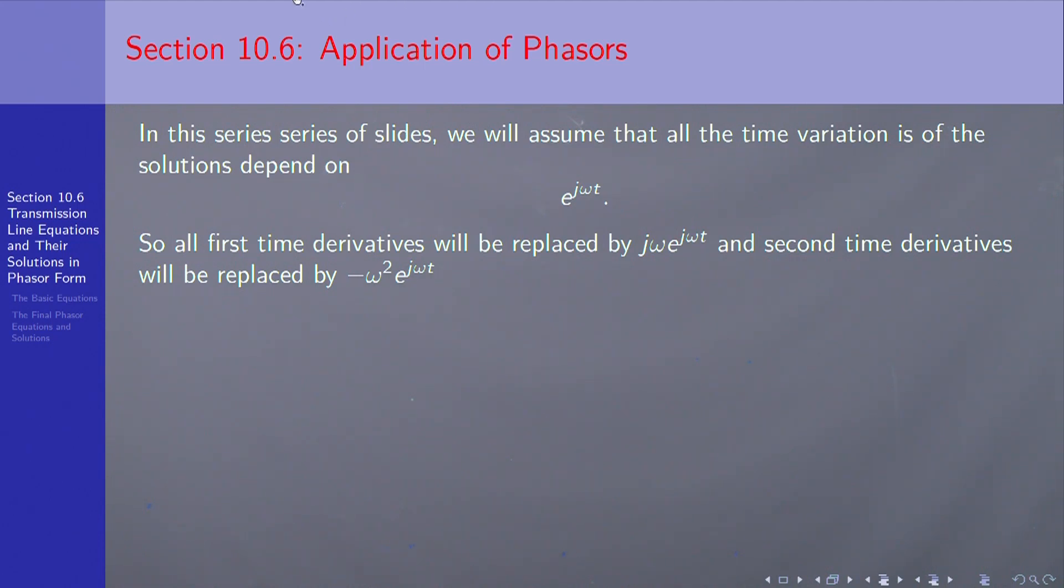Section 10.6 is the next area we're going to consider: application of phasors. Now, in this series of slides, we're going to assume that the time dependence in all the equations is some constant times exponential of jωt, e to the jωt.